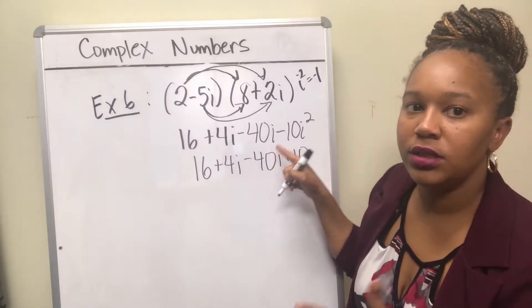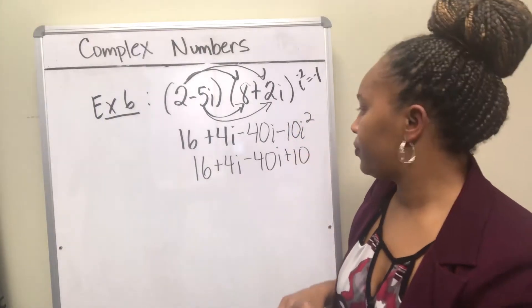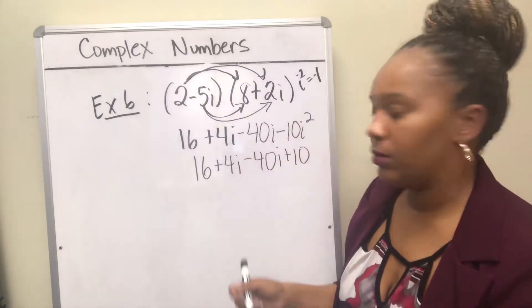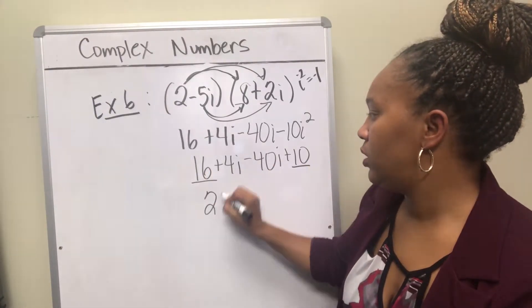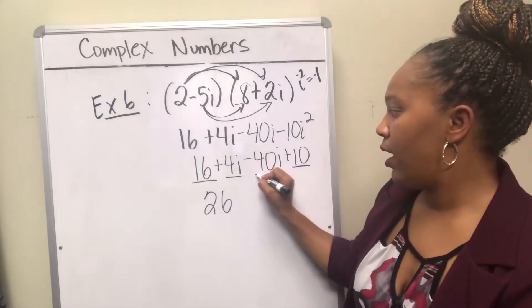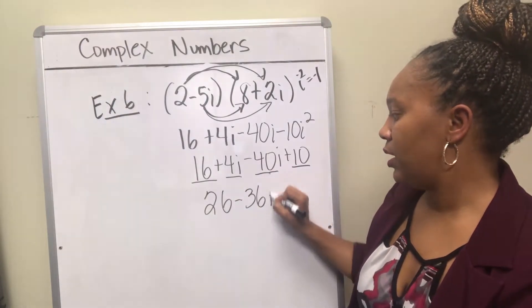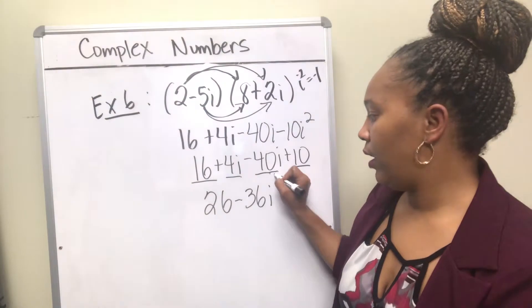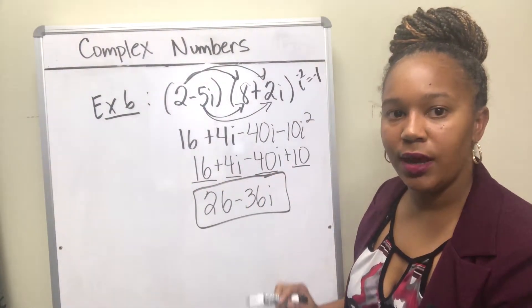So the i squared basically changes the sign on this term right here. And then combine your like terms. 16 and 10 is 26. And 4i minus 40i is negative 36i. So your final answer would be, in complex form, 26 minus 36i.